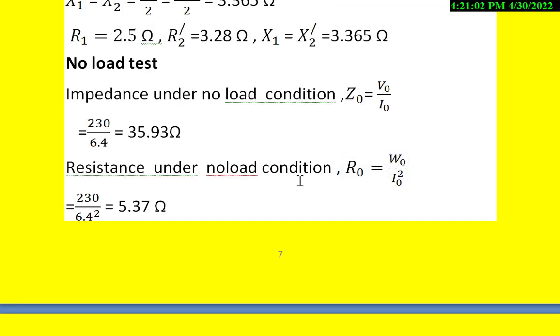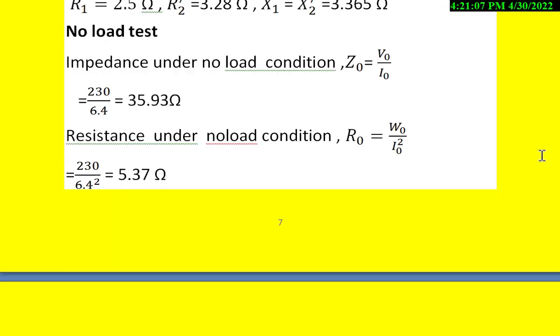Resistance under no-load condition: R0 = W0/I0². W0 = 220W and I0 = 6.4A. Therefore, R0 = 220/6.4² = 5.37Ω.